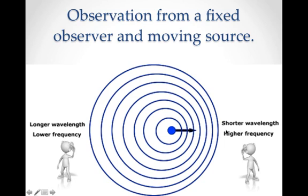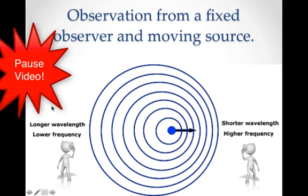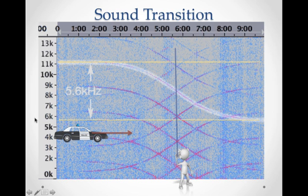Shorter wavelength, higher frequency. So when a car was passing you by, you heard it going from high pitch to low pitch. You would hear a sound transition — this is a particular frequency around 11,000 cycles per second, or 11,000 hertz.